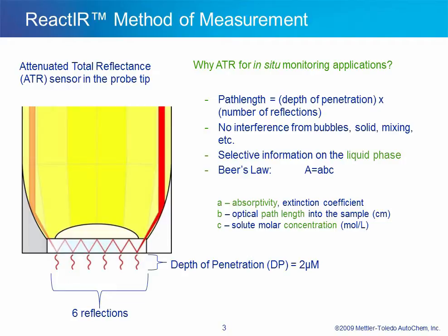With React-IR data, we will plot absorbance and not transmittance. Absorbance is proportional to concentration via Beer's Law. Although A (absorptivity) and B (path length) are functions of a few variables, we generally assume them to be constant. When peak absorbance is plotted versus time, we are looking at concentration versus time. With the specificity of the mid-infrared, a peak absorbance is associated with a particular functional group, and we can therefore trend how the concentration of multiple species change with time in a reaction mixture.